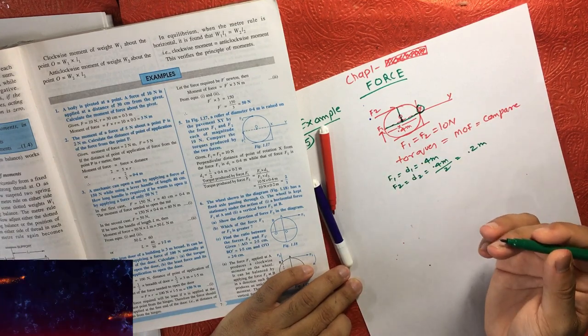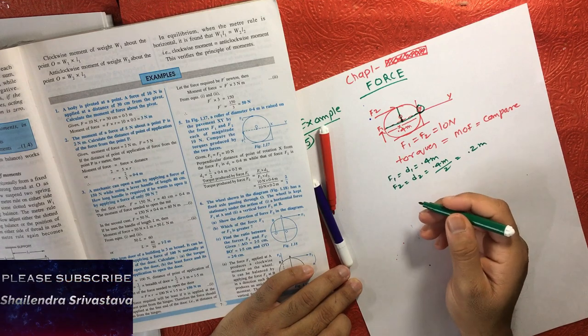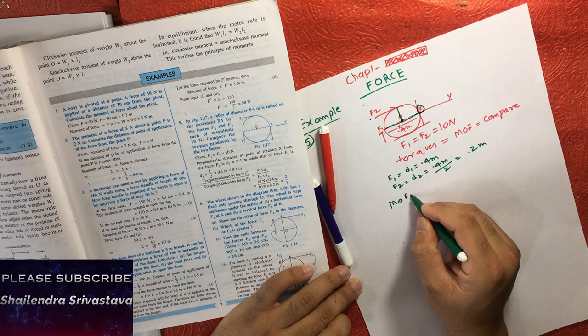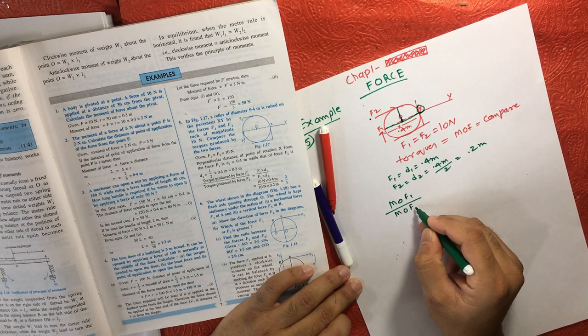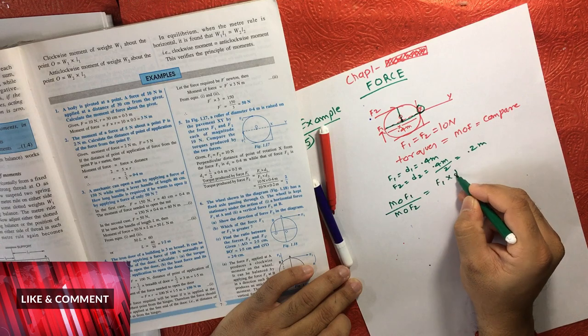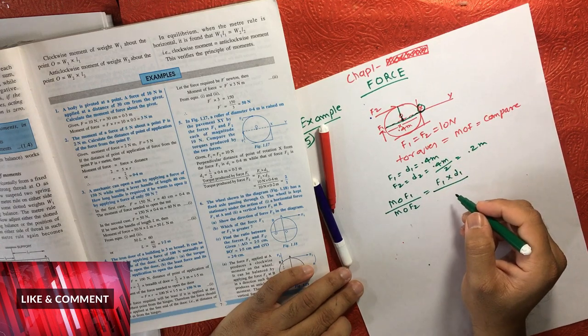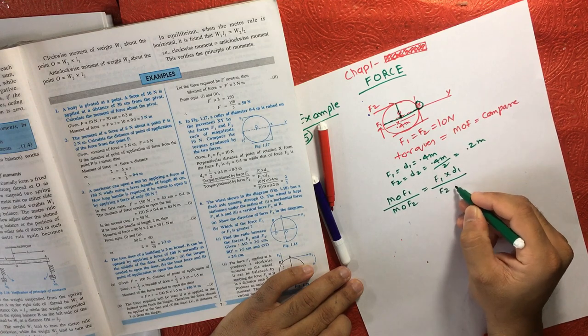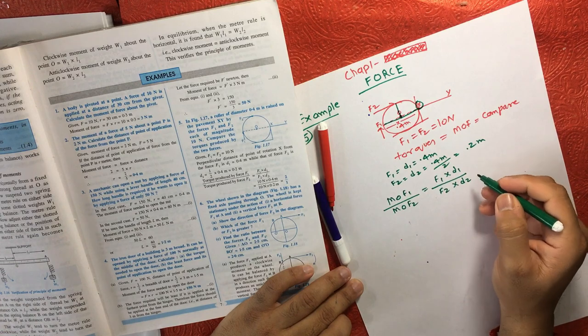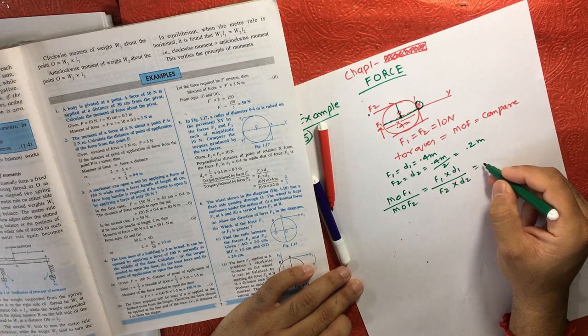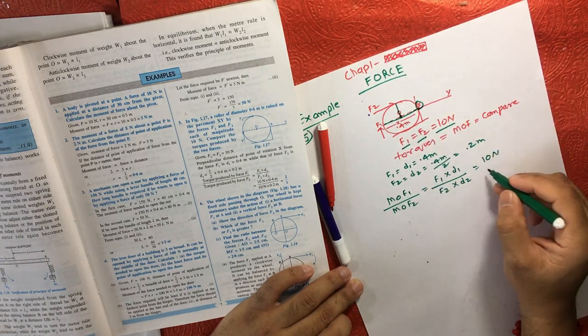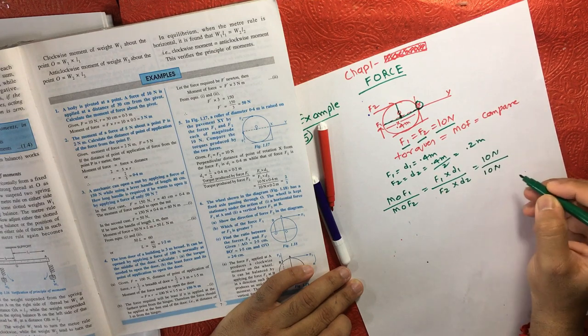Now if I'm going to compare this, the moment of force will be force times distance for F1 and F2. F1 is, we already know, 10, and in case of F2, this is again 10.